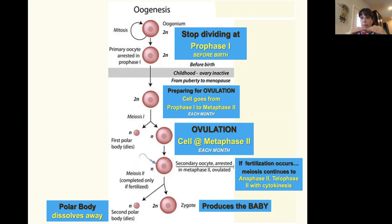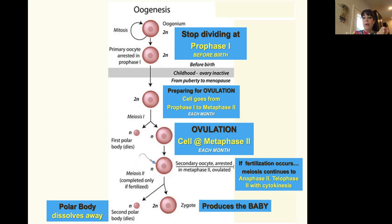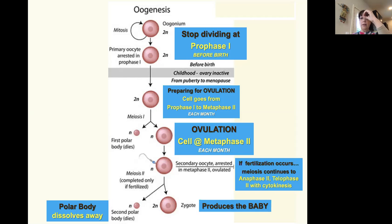Those cells are in your ovaries — that's what a little girl has going on. They're all held in prophase one, just stopped. Then puberty hits, and each month one of those cells continues from prophase one on to metaphase two. It goes through prophase one and then splits — I've got two cells. One of those cells is going to be a polar body and disintegrate; the other cell continues and stops at metaphase two.